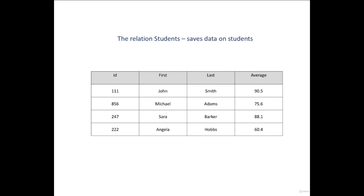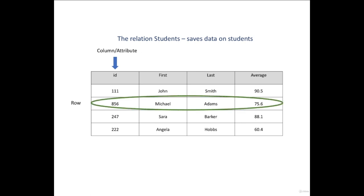You can see that there are four columns. Each column represents an attribute of the student. In this example we have four attributes: the ID, the first name, the last name, and the average. The table consists of many rows. Each row is a record that represents a single student, which has four values: the ID, first name, last name, and average. Every column has its own type, which determines the scope of values that can be inserted.